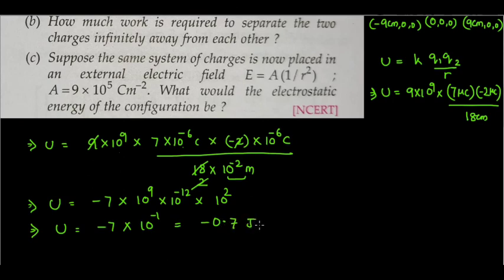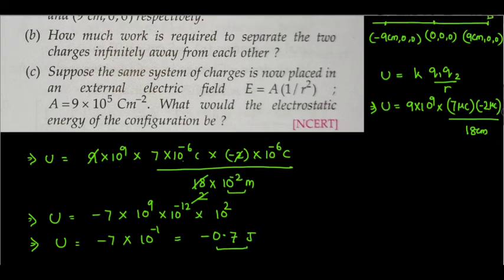So the potential energy of the two-charge system is minus 0.7 joules. The negative energy indicates that the two charges have opposite signs, meaning there is an attractive force between them.